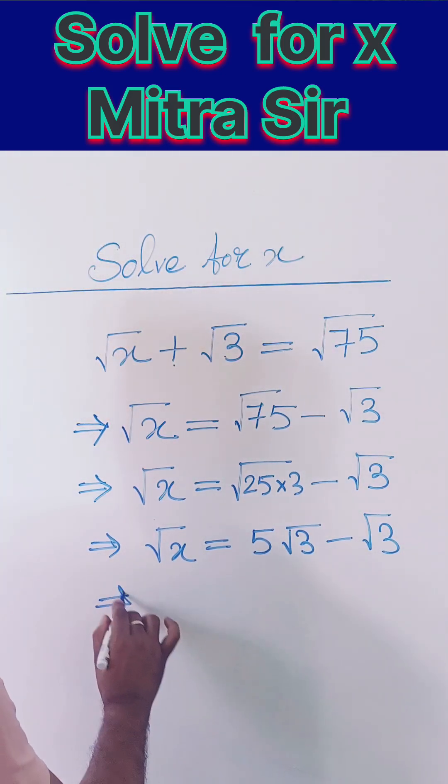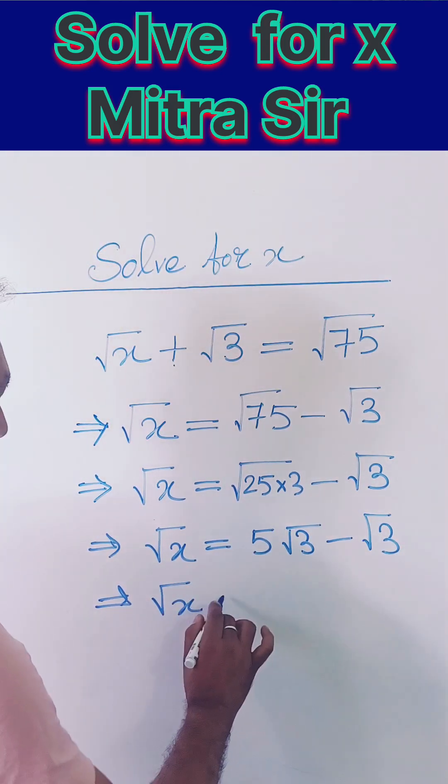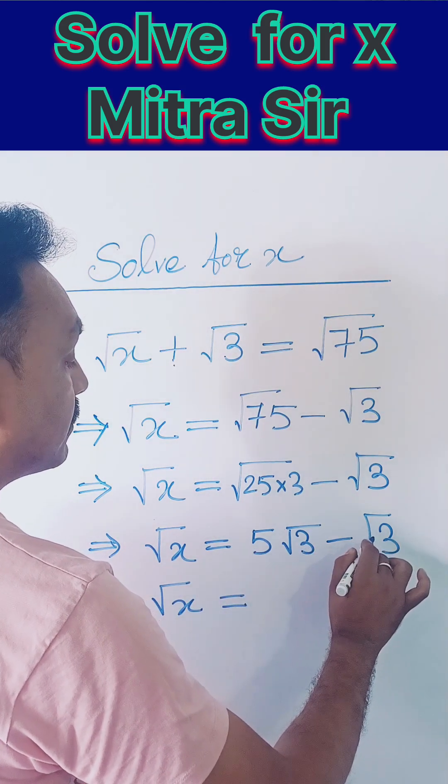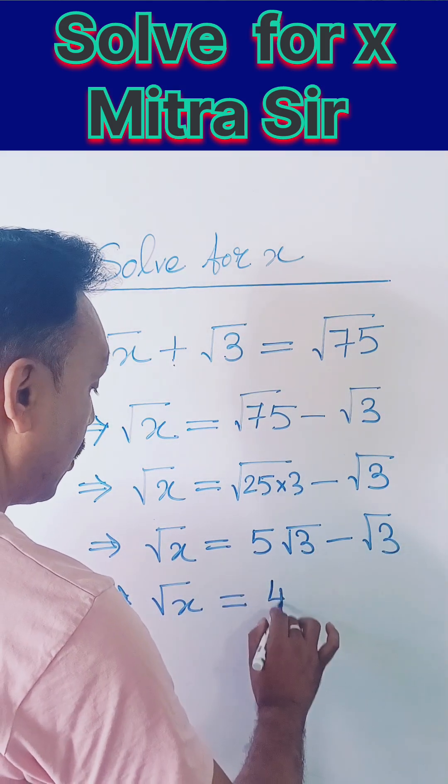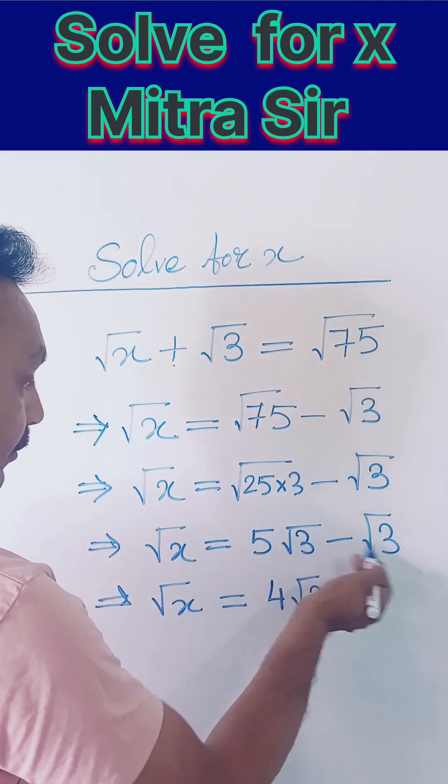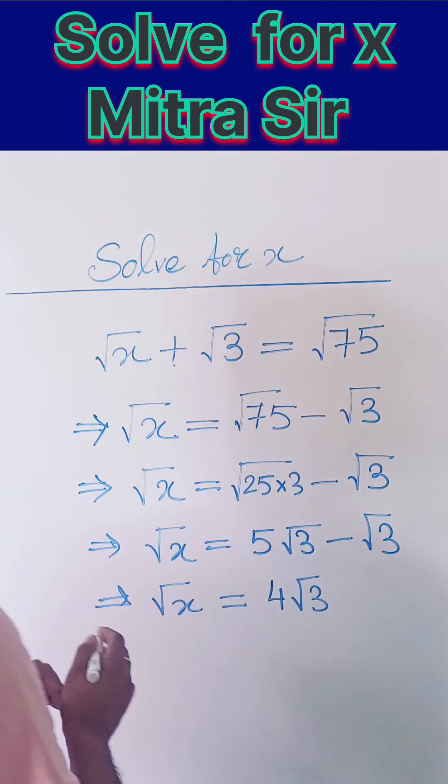And since 3 is a prime number, it will remain under the root minus √3. So far it's clear, I hope. Now the next step is 5√3 minus 1√3, which gives you 4√3. That is 5 minus 1 equals 4√3.